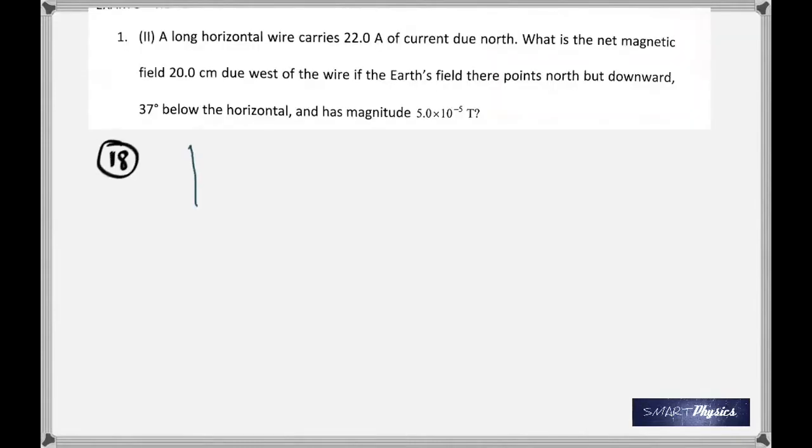Question number one talks about a long horizontal wire carrying 22 amperes of current due north. What is the net magnetic field 20 centimeters due west of the wire if the Earth's field there points north but downward 37 degrees below the horizontal and has a magnitude 5 times 10 to the negative 5 Tesla? Now here there are two magnetic fields: one is the magnetic field due to the Earth and the other is the magnetic field due to the current flowing through the conductor. We've got to find the resultant of the two magnetic fields.